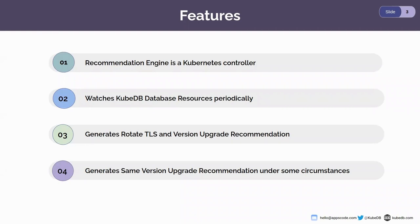It watches KubeDB database resources and also inspects its associated resources like stateful set, pod, certificates, etc., periodically. By default, the period is one hour — it will inspect those resources and generate Rotate TLS and version upgrade recommendations. It also generates same version upgrade recommendations, which is a special type pointing to the current same version under some circumstances.